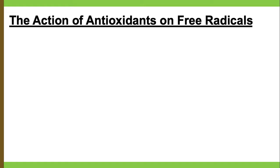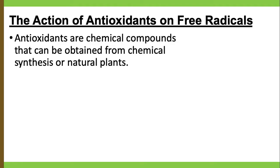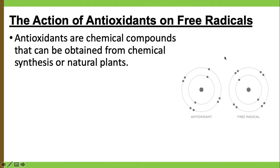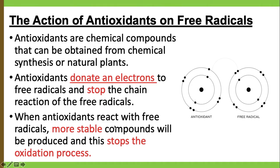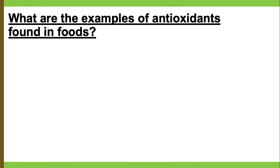The action of antioxidants on free radicals: antioxidants are chemical compounds that can be obtained from chemical synthetics or natural plants. Antioxidants donate an electron to free radicals and stop the chain reaction of the free radicals. When the antioxidant reacts with the free radicals, a more stable compound is produced and the oxidation process stops.